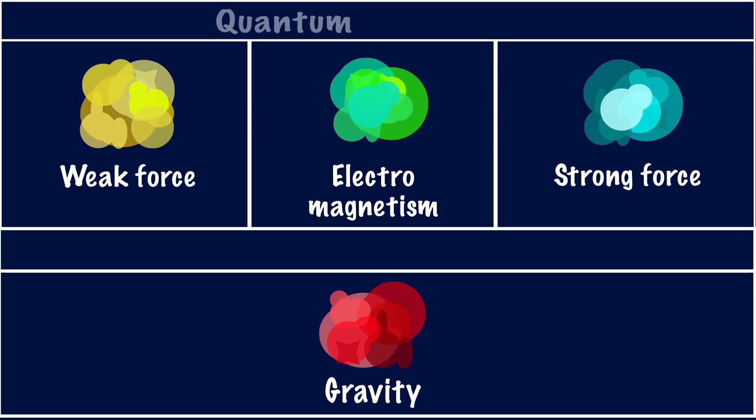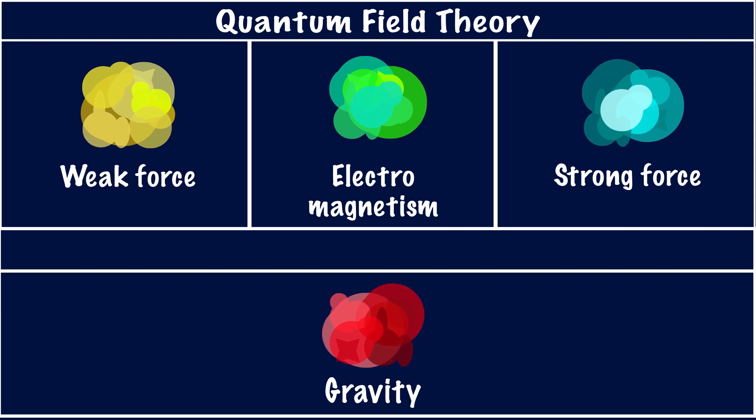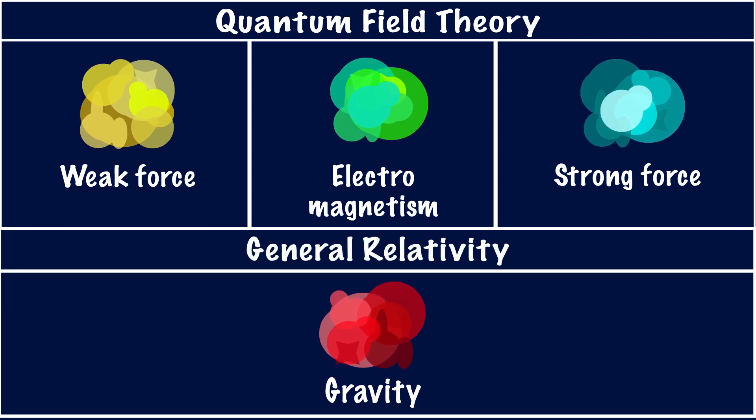We have quantum field theory, which describes the universe on a very small scale, like how a proton and an electron are attracted to each other. And we have Einstein's theory of general relativity, which explains the universe on a larger scale, like how the Earth orbits around the Sun. Electromagnetism and the strong and weak nuclear forces fit under quantum field theory, while gravity is encompassed by general relativity.